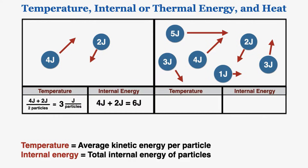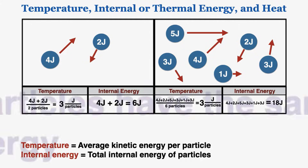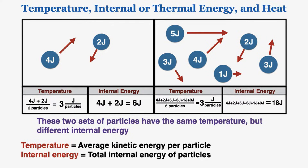If we look at the material on the right and find its average kinetic energy per particle, that's also 3 joules per particle. So these two materials actually have the same temperature as each other because they have the same average kinetic energy, but their internal energy is very different — the internal energy of the material on the right is much greater than that of the material on the left. These two sets of particles have the same temperature but different internal energy, which shows the difference between what we mean by temperature and what we mean by internal or thermal energy.